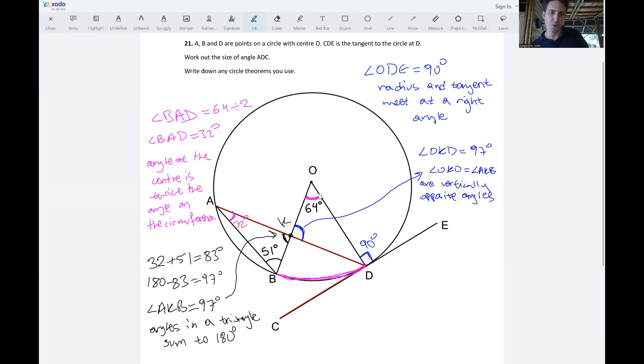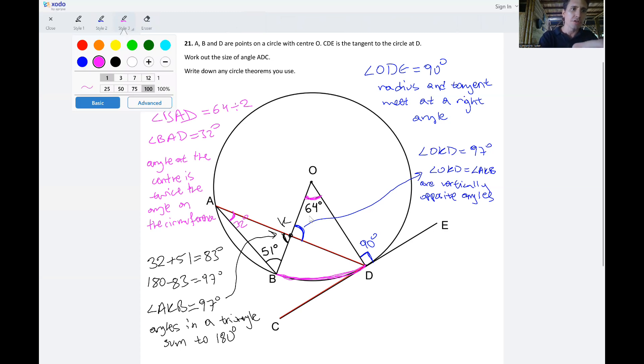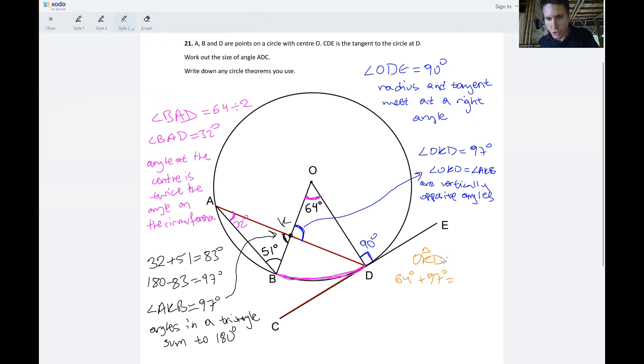Now we have two angles in this triangle so we can add these up because we know angles in a triangle add up to 180 degrees. So we are looking at triangle OKD now. We've got the angle KOD which is 64 degrees. We've got the angle OKD which is 97 degrees. If we add these up, 97 plus 4 will give us 101 plus another 60 gives us 161 degrees.